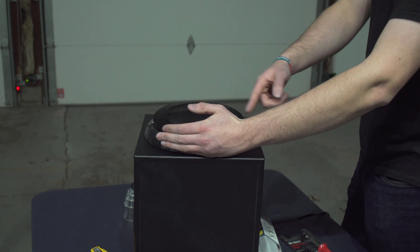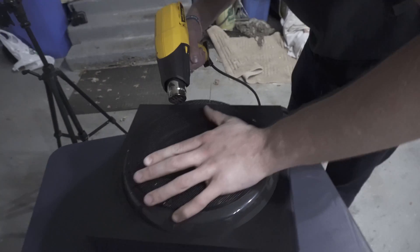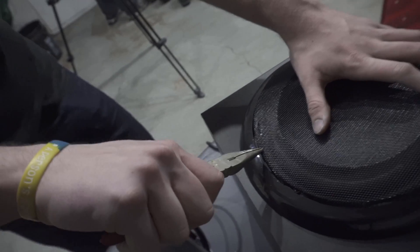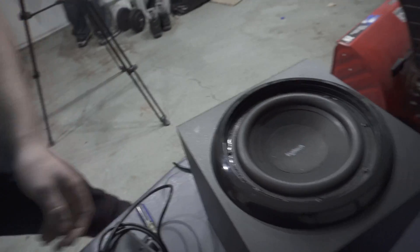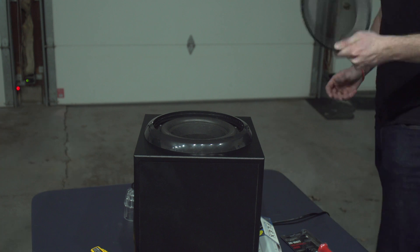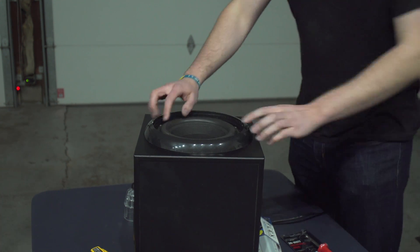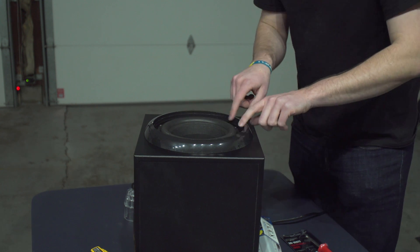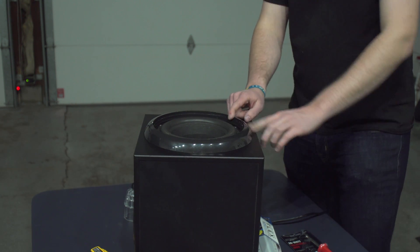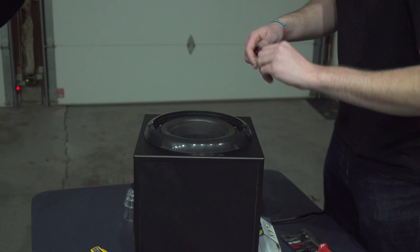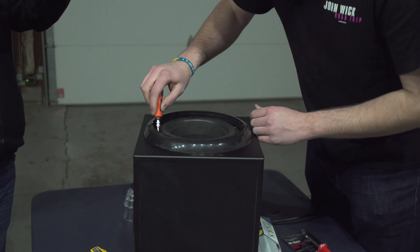We take the heat gun to loosen the glue around the surface of the grill and then we use the pliers and the paper clip to pull the grill off. Once we've done that, we've got the grill off and then as you can see right here around the edge of the subwoofer, there are eight different phillips screws. What we're going to want to do is take your phillips screwdriver and start unscrewing those.